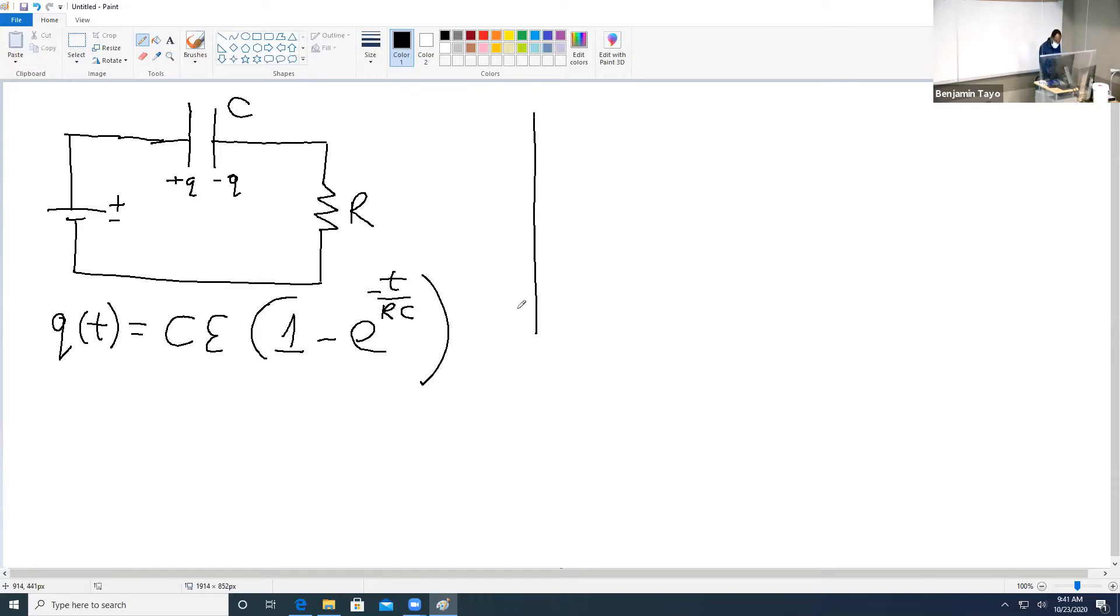Now let's see what this means if you try to make a graph. So let's say this is t and this is q(t). How does the plot of that function look like as a function of time?